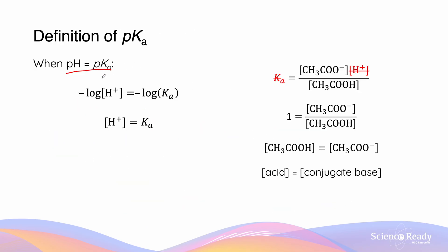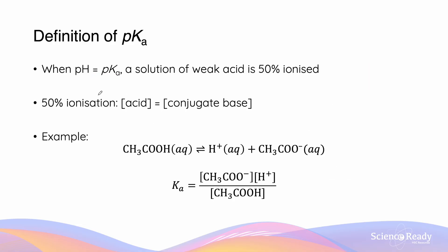Let's look at the scenario where pH equals pKa. When pH = pKa, H⁺ must equal Ka. If we substitute this into the Ka expression, we can cancel these terms, meaning [CH₃COO⁻] / [CH₃COOH] must equal 1. This means the ratio of acid to conjugate base is 1:1. So pKa is the pH at which a weak acid solution is exactly 50% ionized — where acid concentration equals conjugate base concentration.